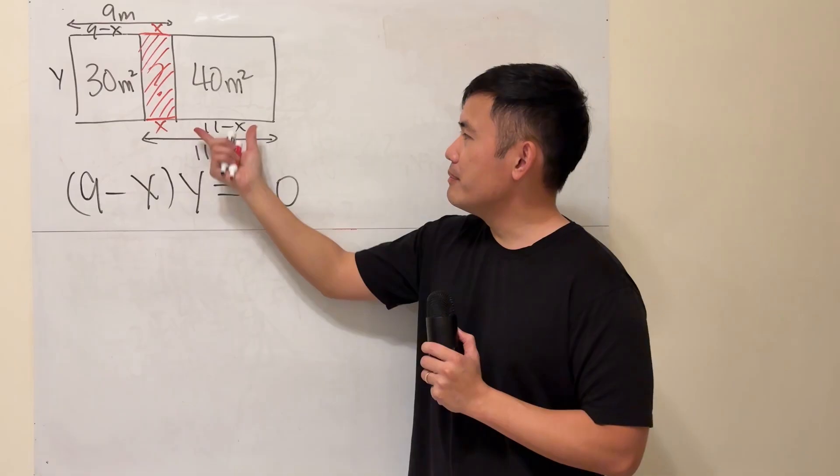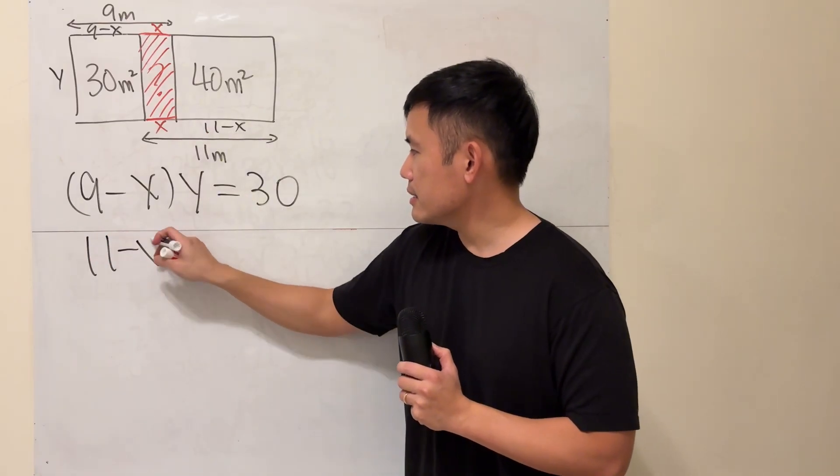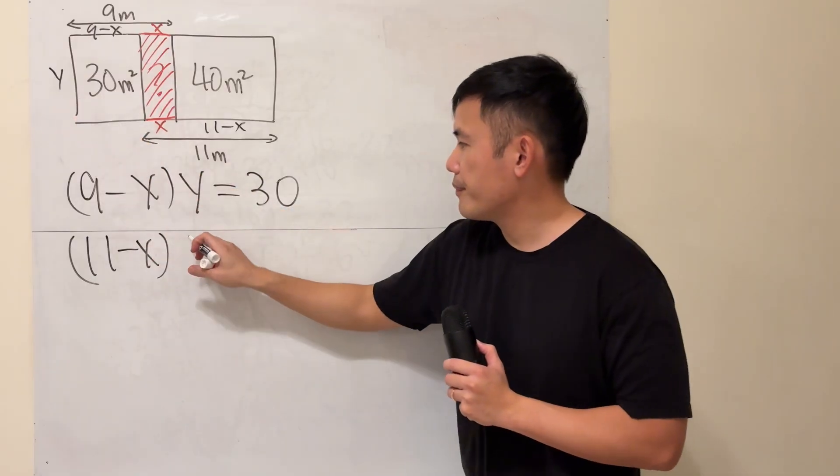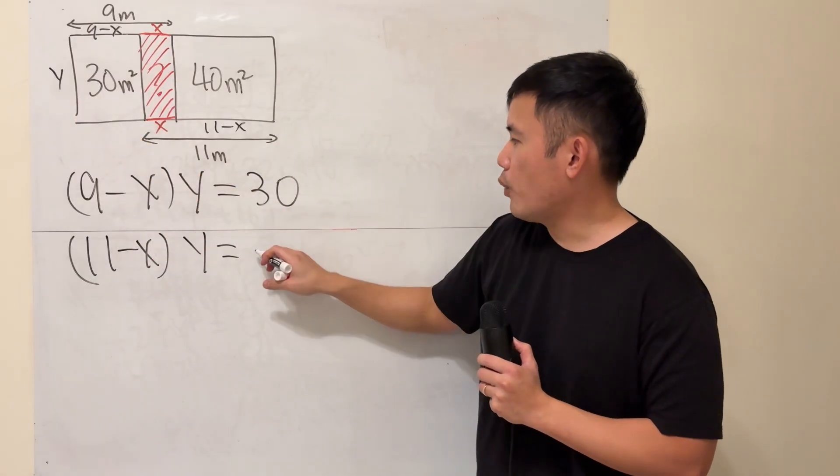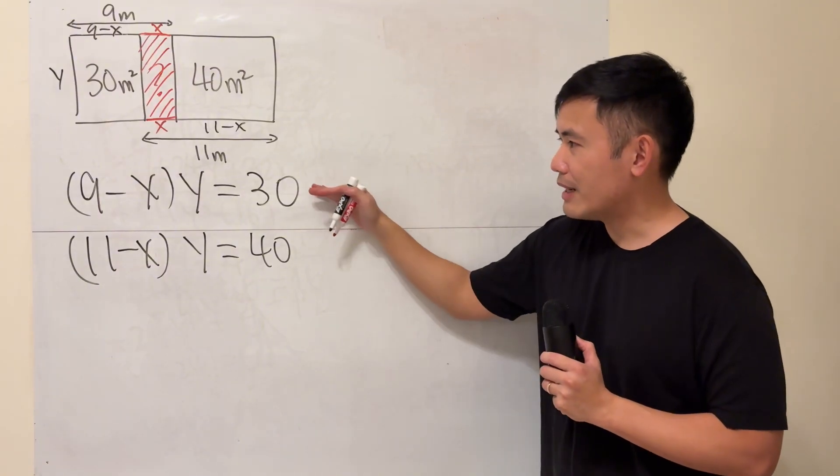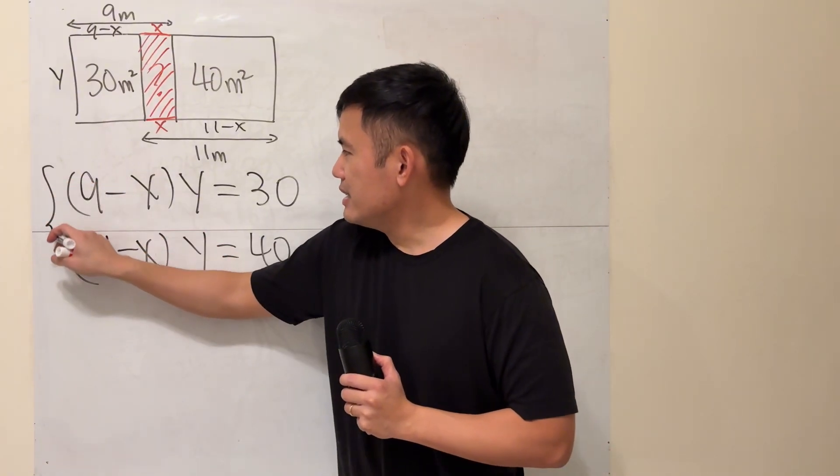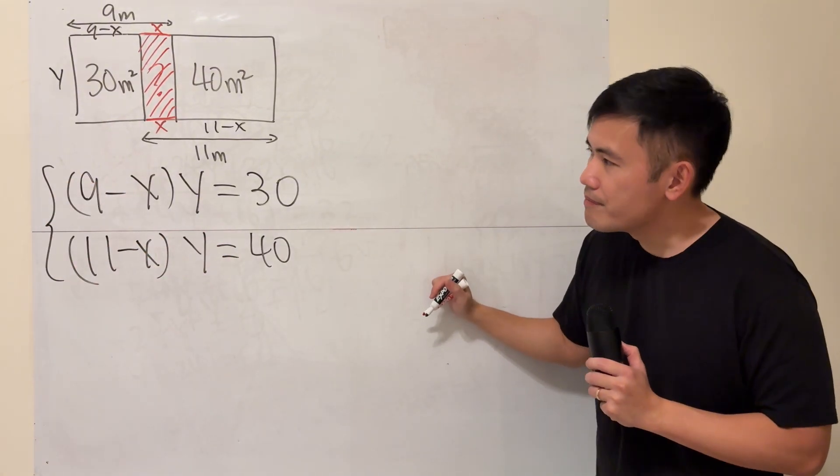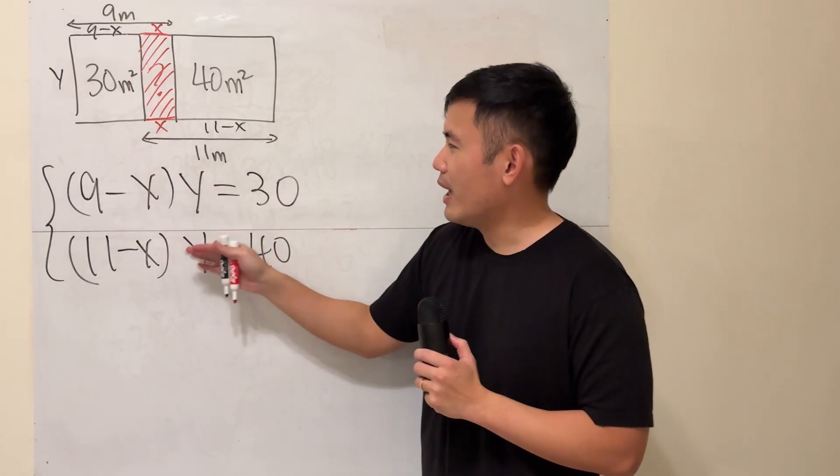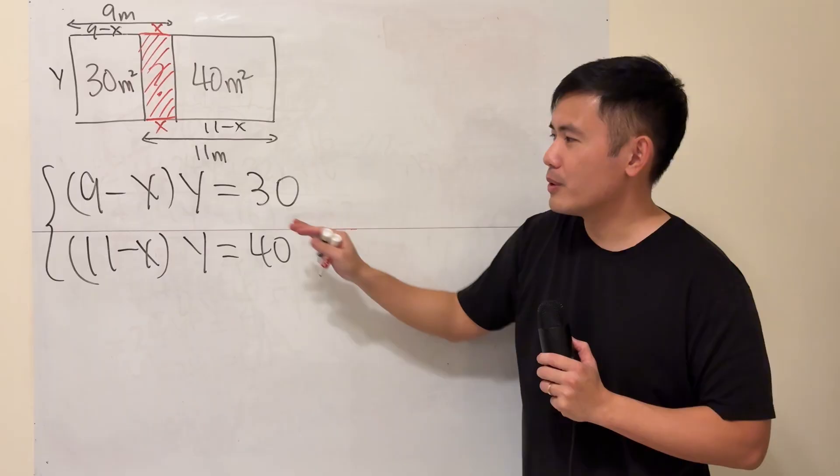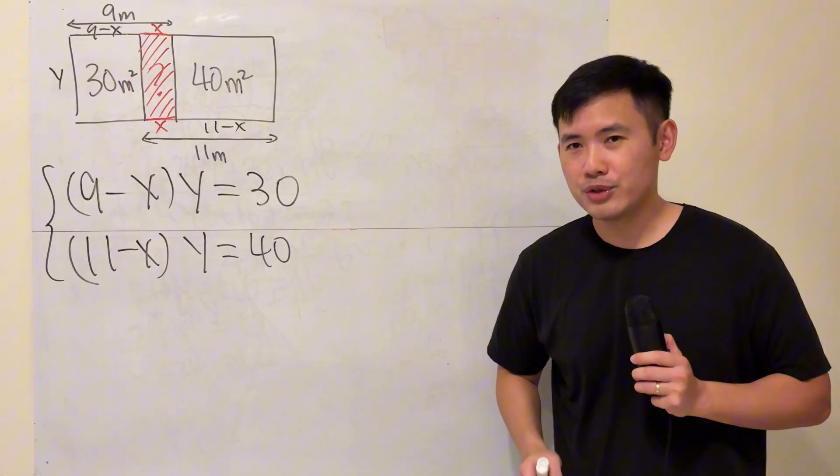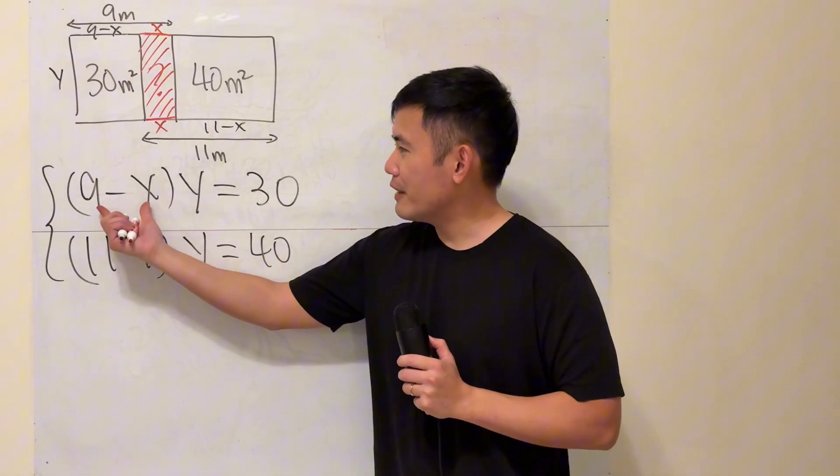This is (11-x), and we multiply that with this, which is y, and that equals 40 meters squared. Now we have a system of equations. You might be thinking, 'How do we deal with this?' You could distribute the y, or divide both sides by y and then use substitution—that's true, but